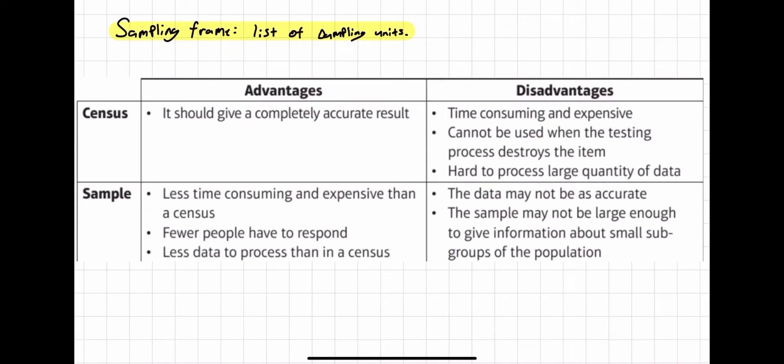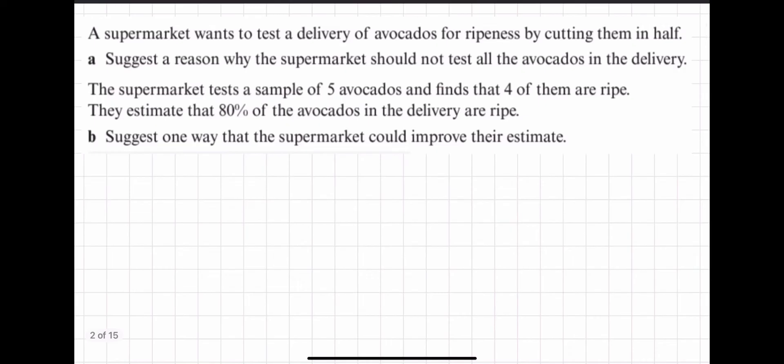However, disadvantages is that the data may not be as accurate. It doesn't mean it can't be as accurate, it means it may not be as accurate. For example, if you have a really large population but you're only sampling 10 people, it's not going to be as accurate as if you were going to measure the entire population. Another disadvantage may be that the sample may not be large enough to give information about small subgroups of the population.